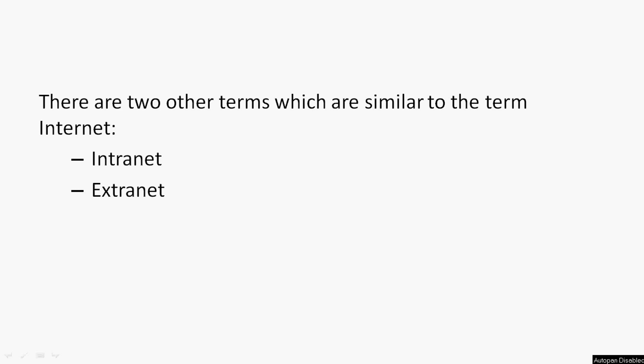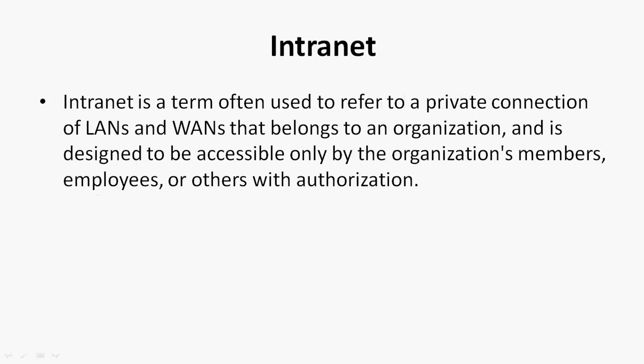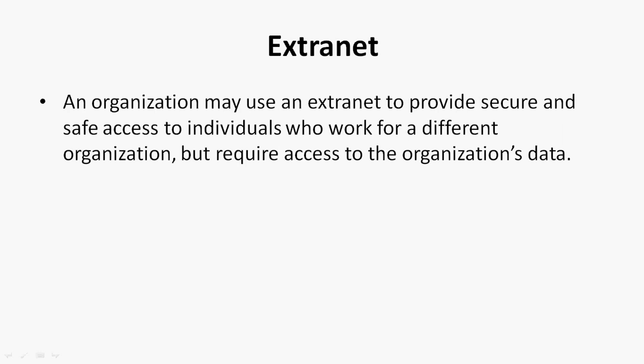There are two other terms similar to internet: intranet and extranet. We will see these one by one. Intranet is a term often used to refer to a private connection of LANs and WANs that belongs to an organization and is designed to be accessible only by the organization's members, employees, or others with authorization.